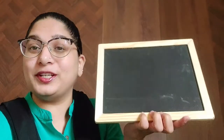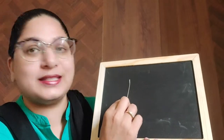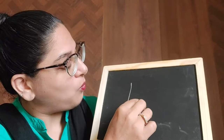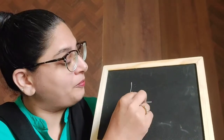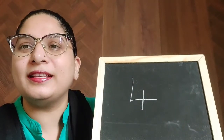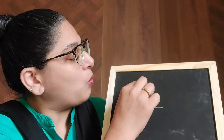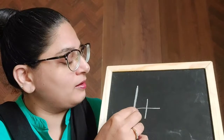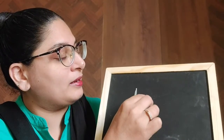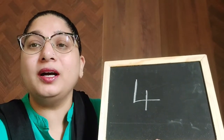Shall we see how to write? I have a slate. We are going to write 1 standing line, 1 sleeping line, again 1 standing line in the center. 1 standing line, 1 sleeping line, 1 standing line. Number 4.